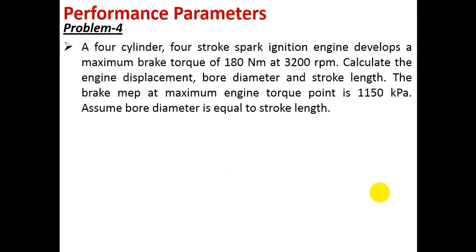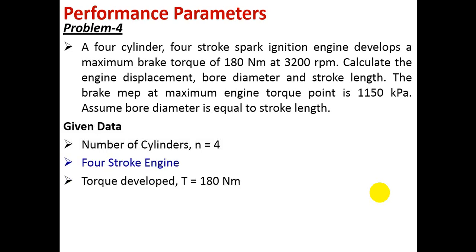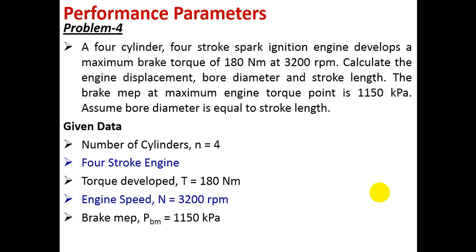Problem number 4: A four-cylinder four-stroke spark ignition engine develops a maximum brake torque of 180 Nm at 3200 RPM. Calculate the engine displacement, bore diameter, and stroke length. The brake mean effective pressure at maximum engine torque is 1150 kPa. Assume bore diameter equals stroke length. Given data: n = 4, 4-stroke engine, T = 180 Nm, N = 3200 RPM, Pbm = 1150 × 10³ Pascal, D = L.